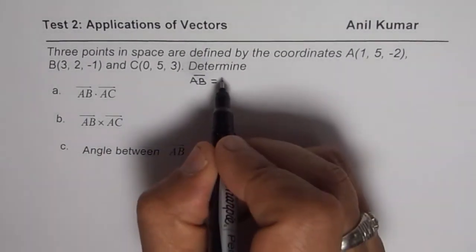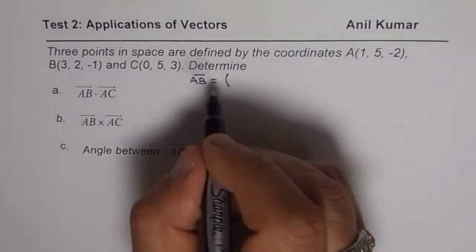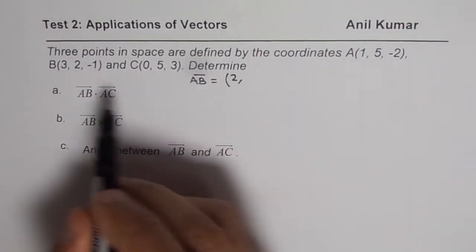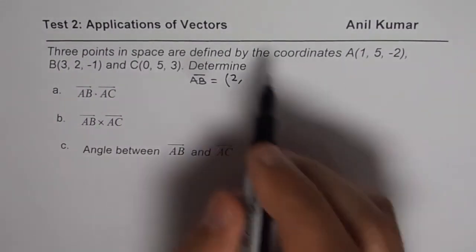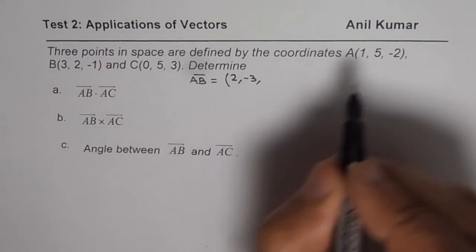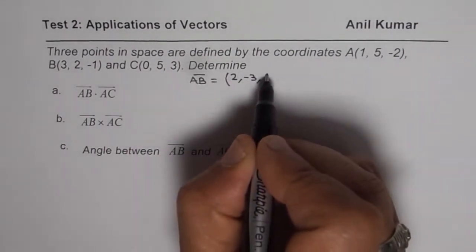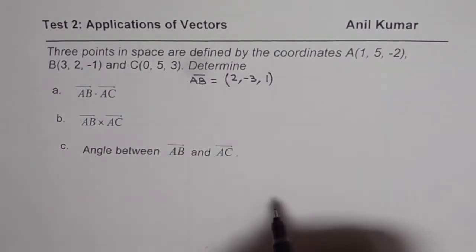So these are the position vectors. So what we get here is 3 minus 1, which is 2, and then 2 minus 5, which is -3, -1 minus -2, that becomes plus 2. So -1 plus 2 gives us 1. So we get vector AB.